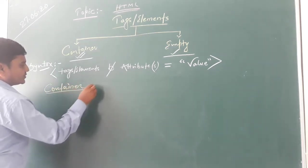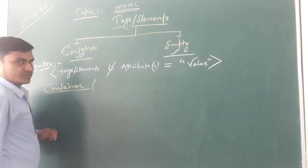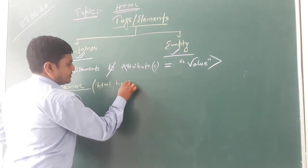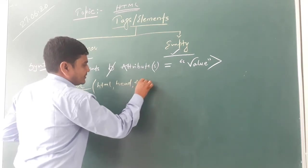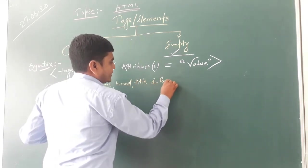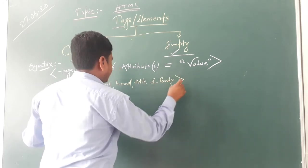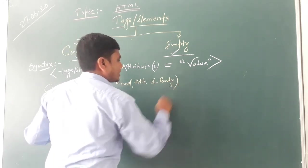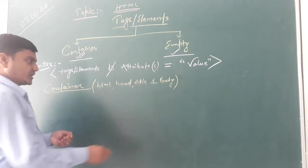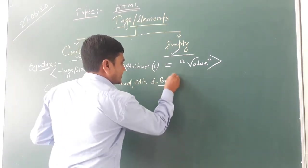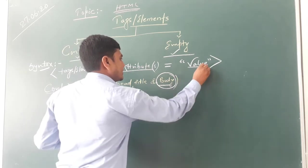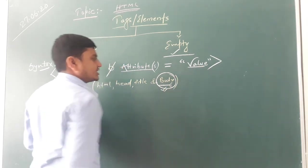In the previous video I told you that HTML, head, title, and body are container tags which are also known as basic tags. So today let me understand all these things — attributes and values — using this body tag.